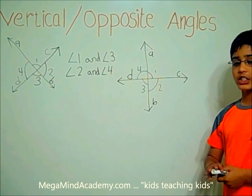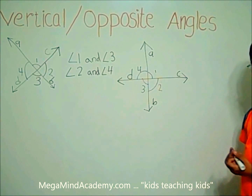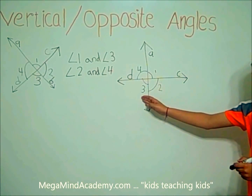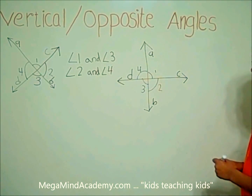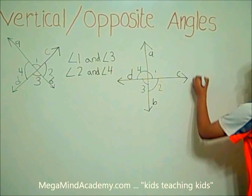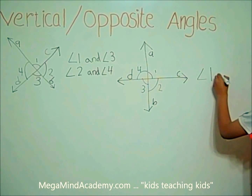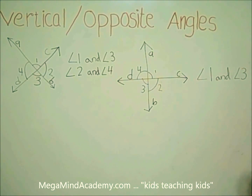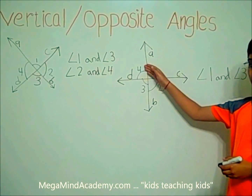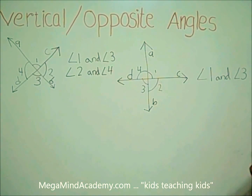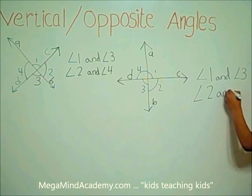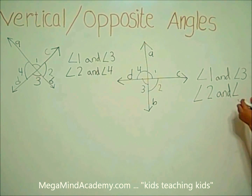Now let's find the actual vertical angles. Angle 1 and angle 3 are opposite to each other, so they are vertical angles. Also, angle 2 and angle 4 are opposite to each other, so they are also vertical angles.